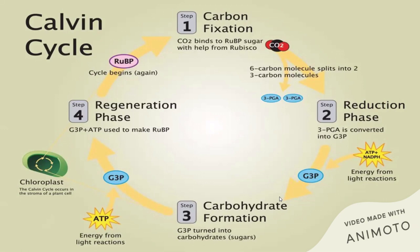In the reduction phase, one of the three-carbon compounds is combined with ATP and reduced NADP from the light-dependent reactions to form carbohydrates. The ATP and reduced NADP — produced from the processes of cyclic and non-cyclic photophosphorylation — add electrons to the three-carbon compound to form carbohydrate, which is stored as sugars or starch in different types of plants.